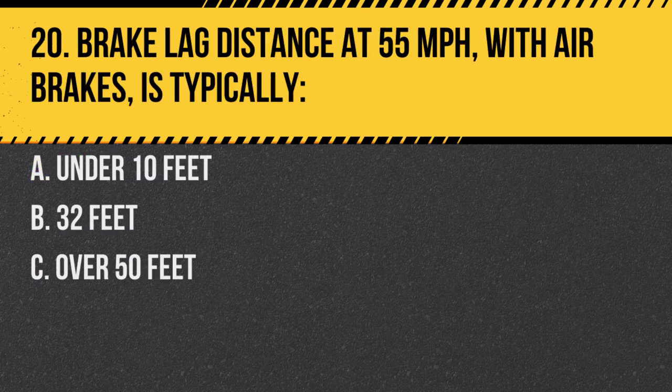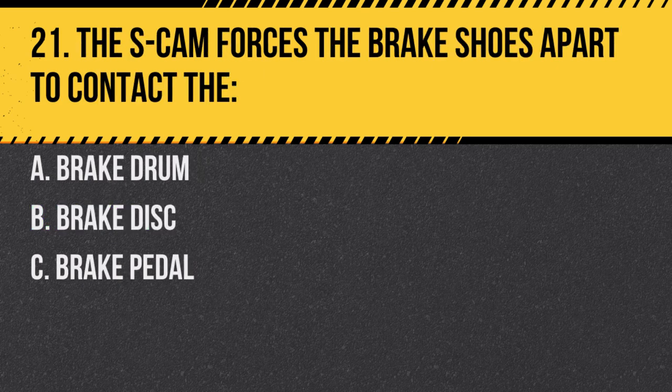Question 20. Brake lag distance at 55 miles per hour with air brakes is typically: A. Under 10 feet. B. Thirty-two feet. C. Over 50 feet. Answer B. Thirty-two feet. Brake lag is the distance traveled before the brakes start to take effect.